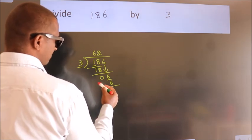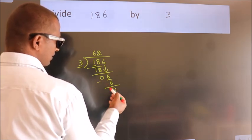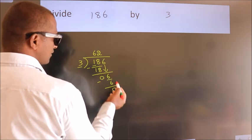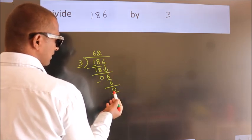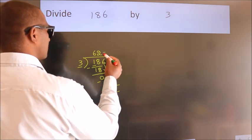Now we subtract. We get 0. After this, no more numbers to bring it down. And we got remainder 0. So this is our quotient.